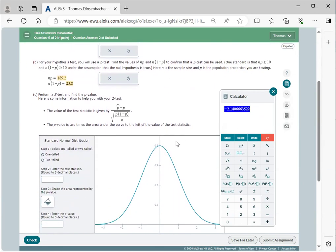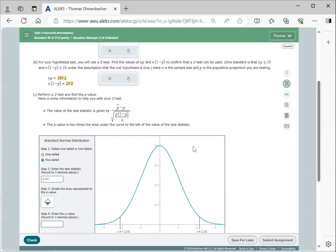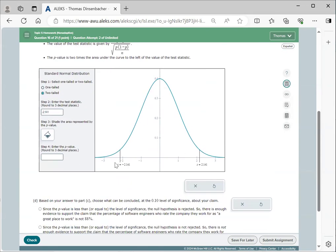And we will now enter that into our graph section here at the bottom. This is a not equal to, so it's a two-tailed distribution. And our test statistic is minus 2.141. Note that when we enter that, we end up with two bars on the left and right that indicate the z-score cutoffs there.